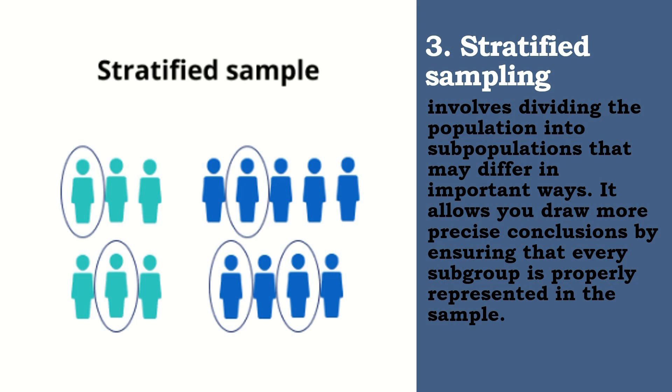Halimbawa na lang, there are 1,000 students in your school. 250 are grade 7, while 200 are grade 8, then 150 are grade 9, and 400 are grade 10. You want to ensure as a researcher that your sample is well-represented or well-distributed for each grade level. You will divide the population into 4 strata based on their grade level. Then, you'll use random sampling.